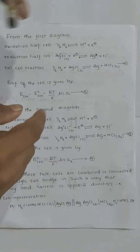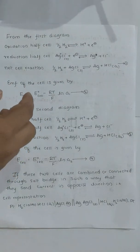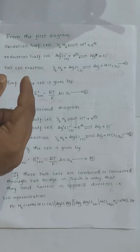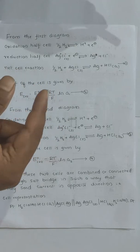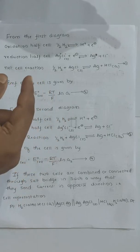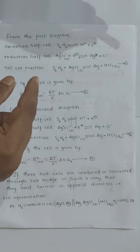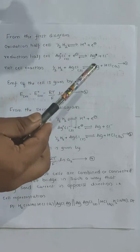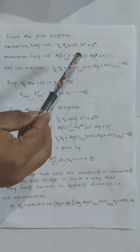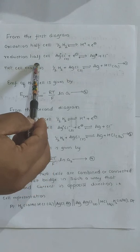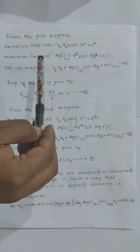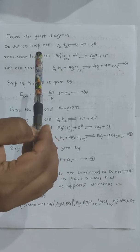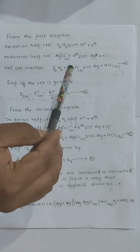From the first diagram, we shall discuss the oxidation half cell. On the left side, oxidation occurs. Oxidation means losing electrons. Therefore, the hydrogen gas is getting converted into H+ ions with the liberation of electrons. This is the oxidation process. In the reduction half cell on the right side, we have the silver electrode coated by AgCl — silver chloride coating.